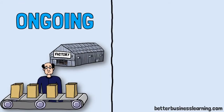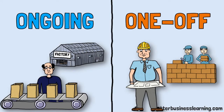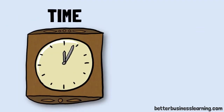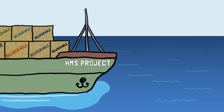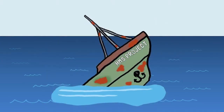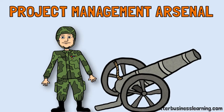The management of ongoing tasks requires a different approach to the management of one-off tasks. Project management is about getting these temporary endeavours complete on time and on budget. The sad truth is that for one reason or another, most projects fail to meet their objectives. So here are some weapons you can add to your arsenal to make sure your project has the best chance of success.